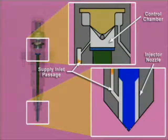At the injector, fuel flows through the supply inlet passage, pressurizing the injector nozzle and the control chamber above the injector plunger.